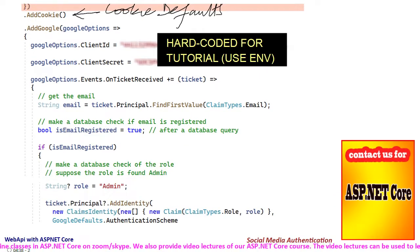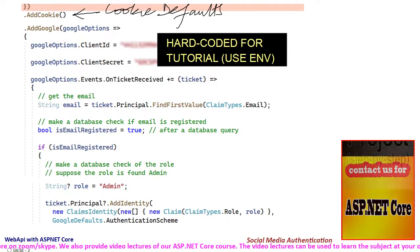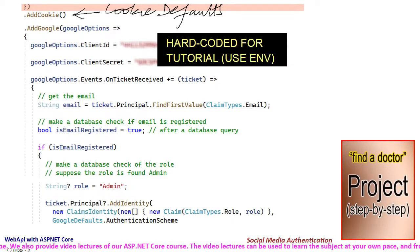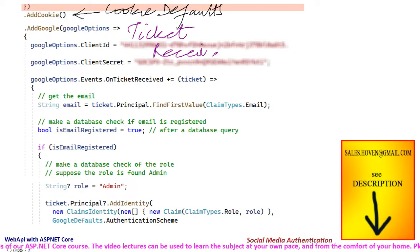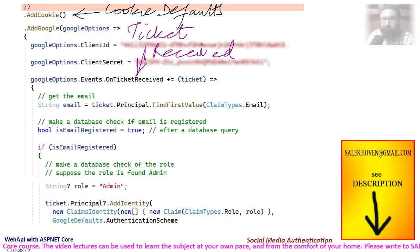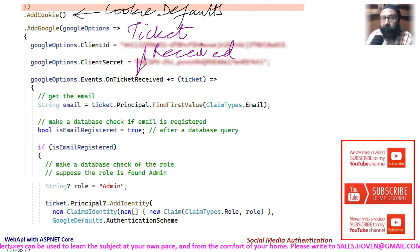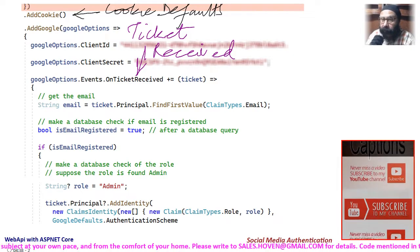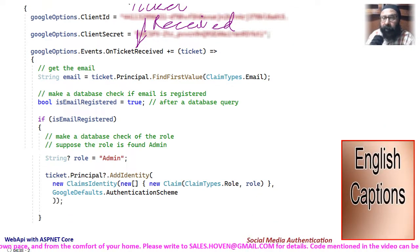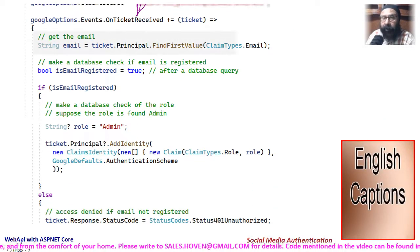The values for client ID and client secret must match the ones shown on your Google console page. Lastly, we have subscribed to the ticket received event. This callback executes after a user has successfully authenticated from the login page of Google. We can extract the email at this point.